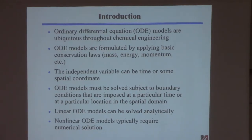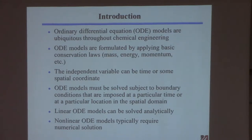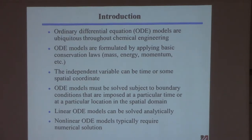If the independent variable is a spatial domain, the condition is at some point in the domain — like the entrance or exit of a reactor. If the model is linear, with A as a constant, please tell me you know how to solve that differential equation. You separate and integrate, and the solution is exponential. To solve it, I'd need to give you a value of y at some point x — that's a boundary condition. If it's at x equals zero or time equals zero, these are called initial conditions.